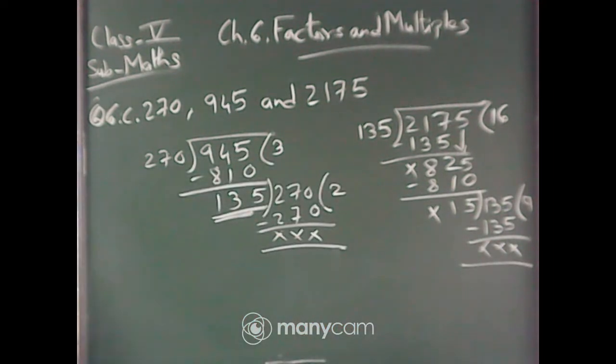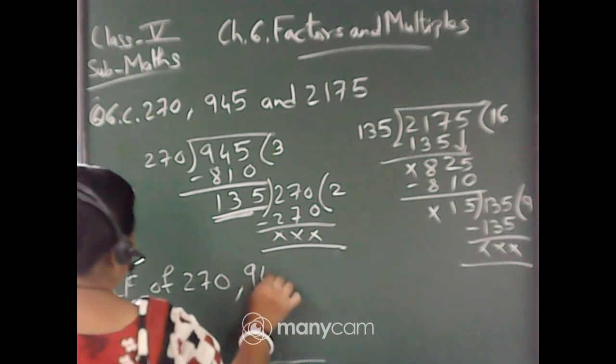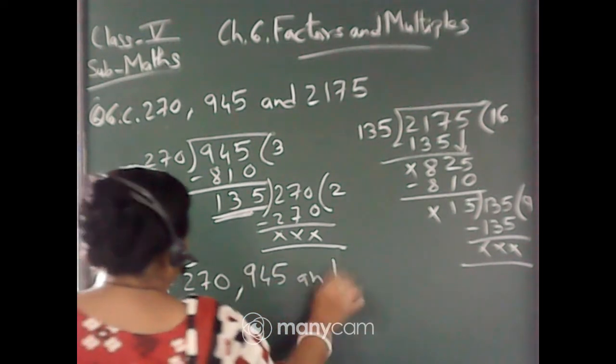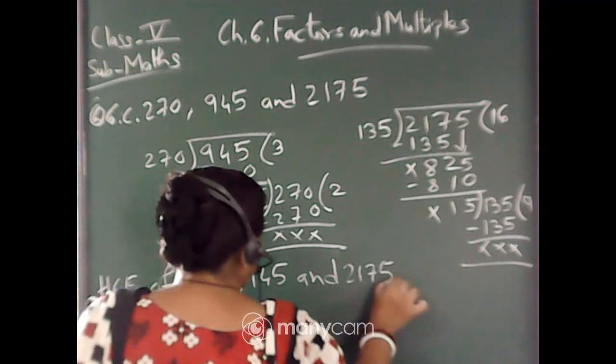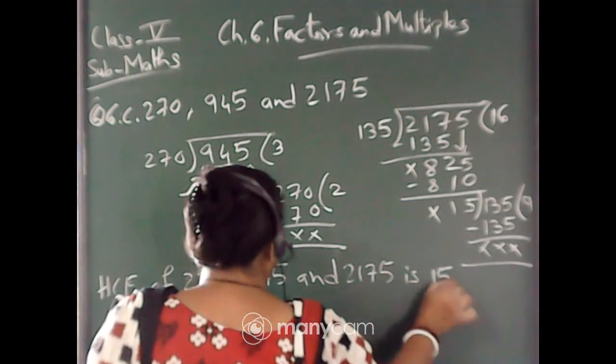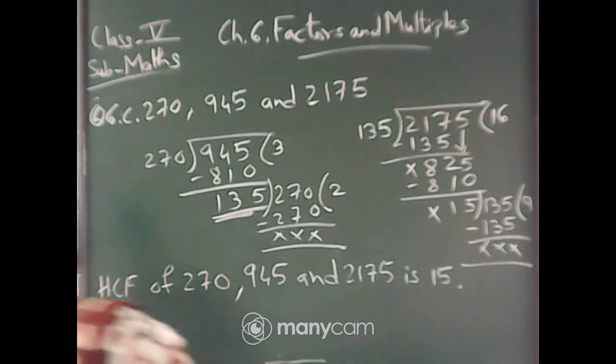That means HCF of, you will write the answer. HCF of 270, 945, and 2175 is 15. Let us do question number c. Let us do question number d.